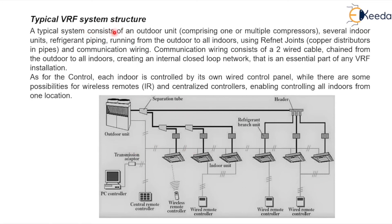A typical VRF system consists of an outdoor unit comprising one or multiple compressors, several indoor units, refrigerant piping running from the outdoor to all indoors using refnet joints (copper distributors), and communication wiring consisting of a two-wire cable between outdoor and indoor units creating an internal closed loop network. In this diagram, you can see six indoor units connected to one outdoor unit, with refnet joints used to branch the piping.